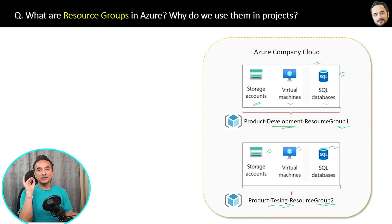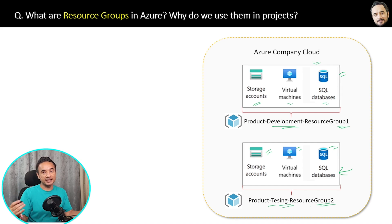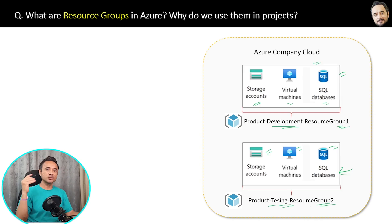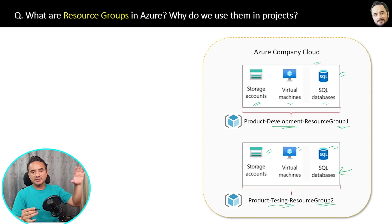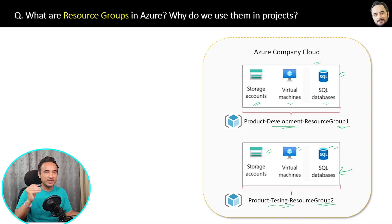These testing resource group resources are available to both the development team and the testing team. Similarly, for production or UAT environments you can create a separate resource group with a different set of resources. If you are from a development background: Azure services are like classes, resources are like objects, and resource groups are like collections of objects — like lists or namespaces. In short, we use resource groups to organize resources properly.